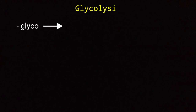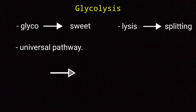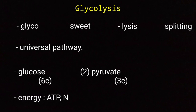In glycolysis, the word 'glyco' means sweet and 'lysis' means splitting. So glycolysis is the splitting of sweet molecules, that is glucose. It is a universal central pathway of glucose metabolism. Glycolysis is the metabolism in which one molecule of glucose is degraded in a series of enzyme-catalyzed reactions to yield two molecules of the three-carbon compound pyruvate, and energy is released in the form of ATP and NADH.